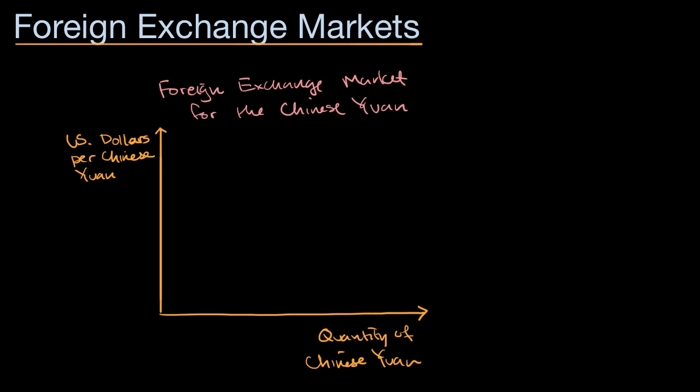I encourage you to pause this video and think deeply about why it's US dollars per Chinese yuan, as opposed to Chinese yuan per US dollars, and why I put the quantity of Chinese yuan on the horizontal axis instead of the quantity of US dollars. Because this is the foreign exchange market for the Chinese yuan. I could have done another chart where it's the foreign exchange market for the US dollar, in which case the quantity would be US dollars, and I would think about how much Chinese yuan per US dollar. But here it's the other way around — I'm in the market for the Chinese yuan.